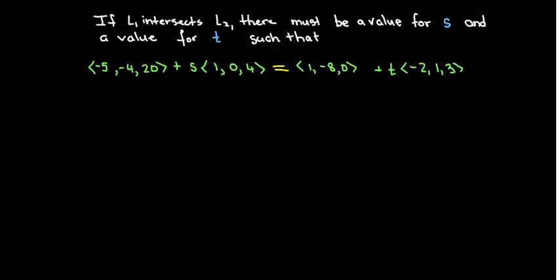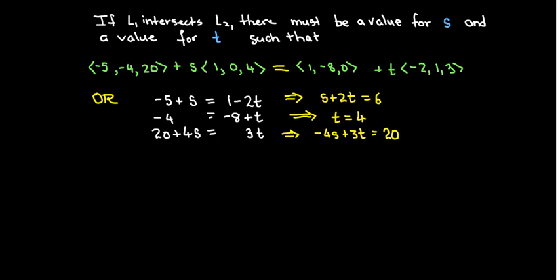If that's true, I can write down a system of equations by looking at corresponding components. The first component tells me -5 + s would equal 1 - 2t. The second component says -4 + 0 equals -8 + t. And the third component says 20 + 4s would equal 3t. I can clean those equations up. I like to write the variables on the left-hand side and the constants on the right. In this case, the second equation gives me a value for t—t would have to equal 4. I'm going to substitute that value into the first equation and I'll find that s equals -2.